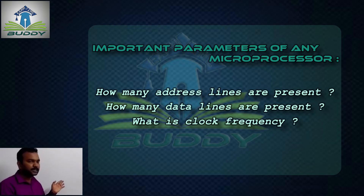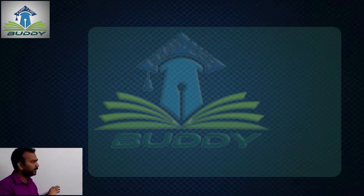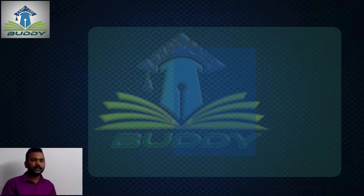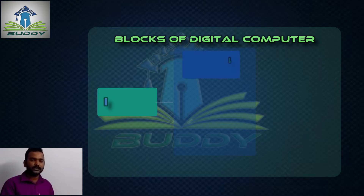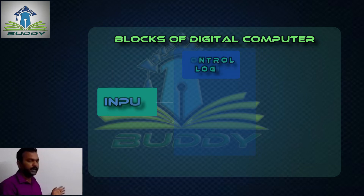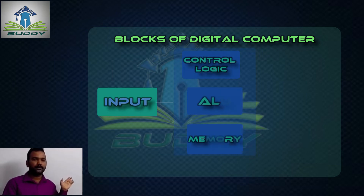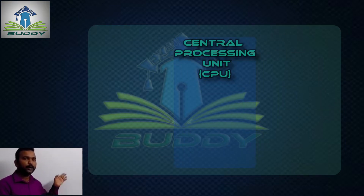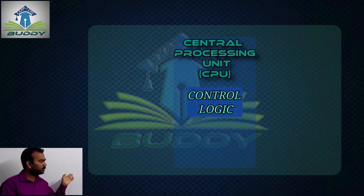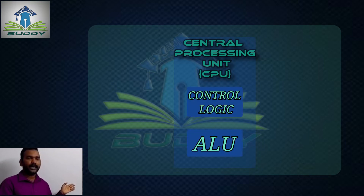These are the important parameters for any microprocessor. Now we will see the digital blocks of the digital computer system. The following are the blocks: the input block, the control logic block, the ALU block, the memory block, and finally the output block. The combination of the control logic block and the ALU block is called the central processing unit.